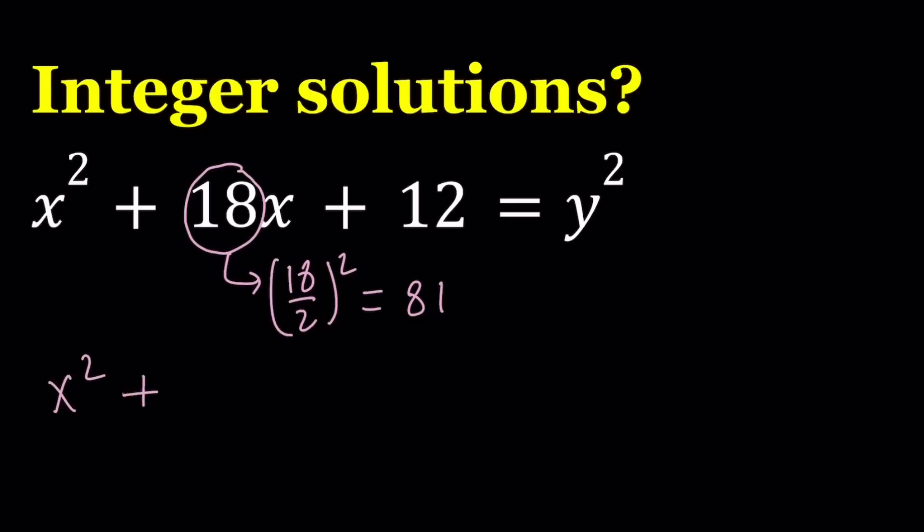To get that, here's what we're going to do. We're going to add 81 minus 12, which is 69. So this makes 81. But we can't just add 69 to both sides. We have to also subtract it. So now it's equivalent to adding 0 to the left hand side.